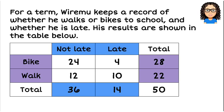Here's our problem. For a term, Wiremu keeps a record of whether he walks or bikes to school, and whether he is late. So his results are shown in this table. So we can see that he's not late or late, and biking or walking, and he has recorded this for 50 days.